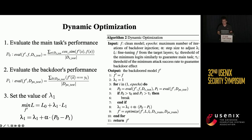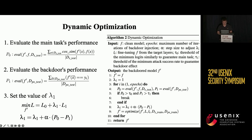So we propose dynamic optimization to set the value of Lambda1 by considering both main task performance and backdoor injection. Due to the absence of data, we choose to measure these two metrics using the substitute samples. Particularly, we evaluate the main task performance by P0, which measures the logit similarity distance between the backdoor model and the clean model against the same clean substitute samples. We also evaluate the backdoor injection performance by P1, which measures the backdoor success rate on the poison substitute samples. Based on P0 and P1, we dynamically set the value of Lambda1.